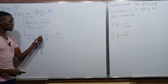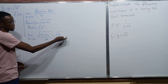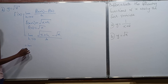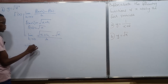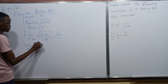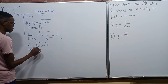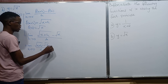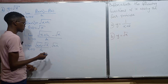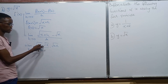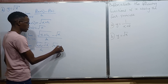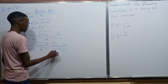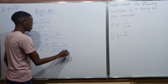So what we do is rationalize the numerator by finding its conjugate and multiplying the fraction by it. We multiply by (square root of x plus h plus square root of x) divided by (square root of x plus h plus square root of x).